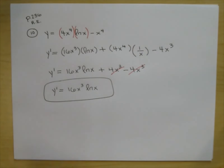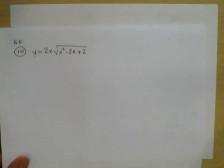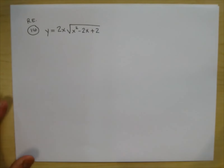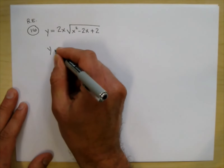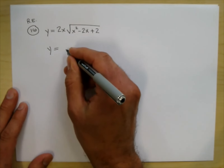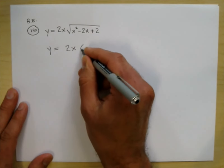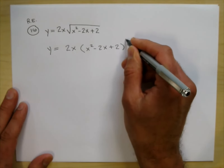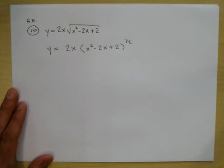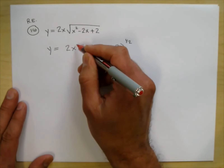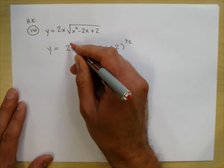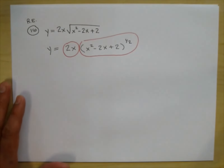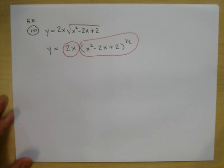Let's do our next problem. This is number 16 from the Review Exercises. Go ahead and see if you can do the problem. I'm going to change that square root to the 1/2 power. So this is 2x times (x²-2x+2) to the 1/2 power. To take the derivative, I'm going to do the product rule, and there will be a little chain rule mixed in.